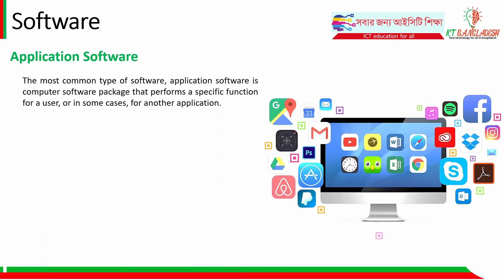Application software is the most common type of software. Application software is a computer software package that performs a specific function for a user, or in some cases for another application. Each application program is designed for a specific function.